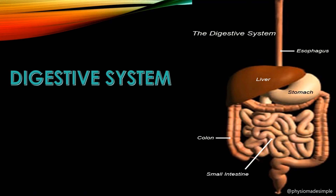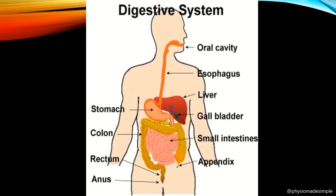We are going to start with the next system, that is the digestive system. The digestive system — its function is clear. What are the organs involved? We will learn about the details of the digestive system. It starts with the mouth and ends in the anus — that is the structure and its importance and function. This is the entire digestive system shown in one small picture.